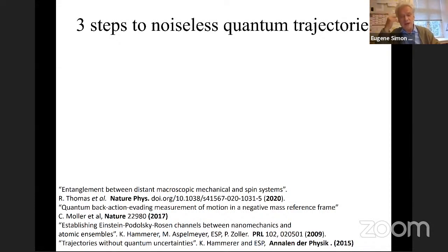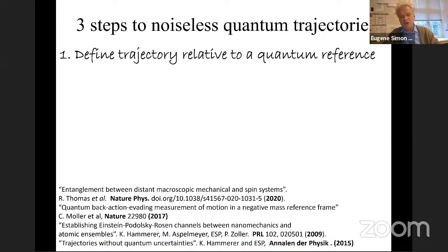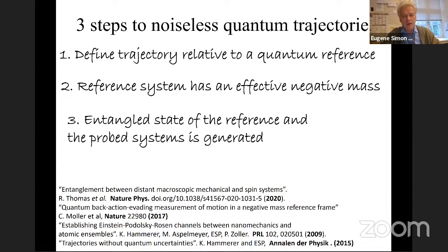There are three steps identified to achieve noiseless quantum trajectories — that is, tracing the path of a particle without limitations imposed by the naively perceived Heisenberg uncertainty principle. First, you have to define this trajectory relative to a special reference frame. Second, this reference frame should have an effective negative mass — and in a minute I will show you this is not science fiction; such a system exists. Third, one should be able to generate an entangled state between the reference frame with effective negative mass and the probe system. Going through those three steps, you are actually able to trace the motion of the particle without any limits.